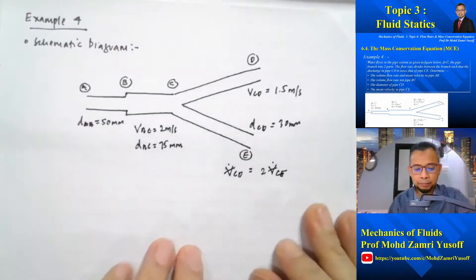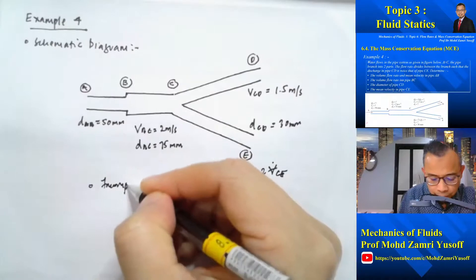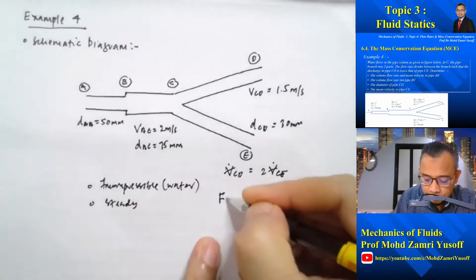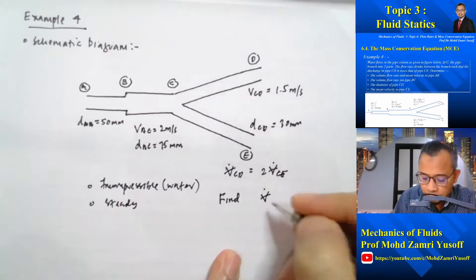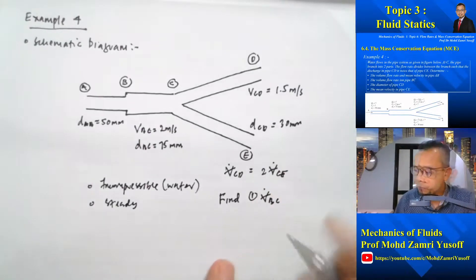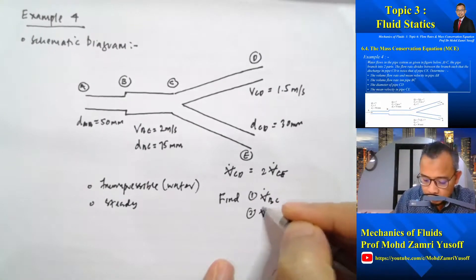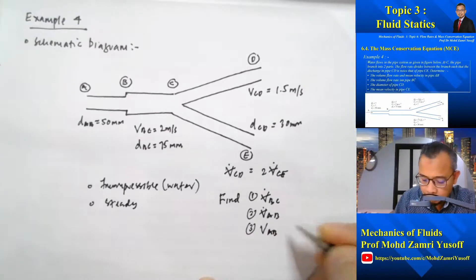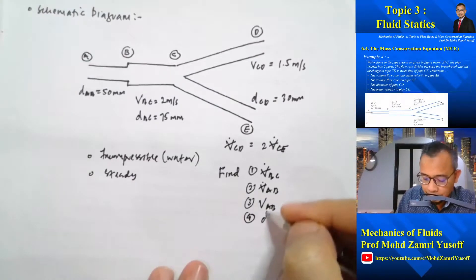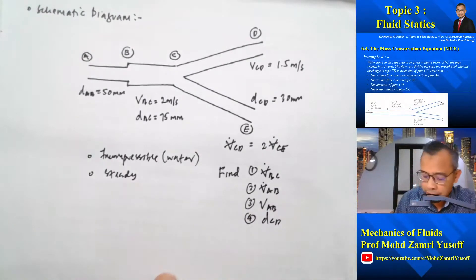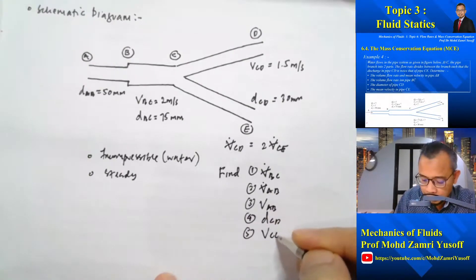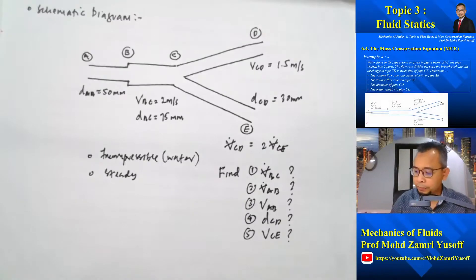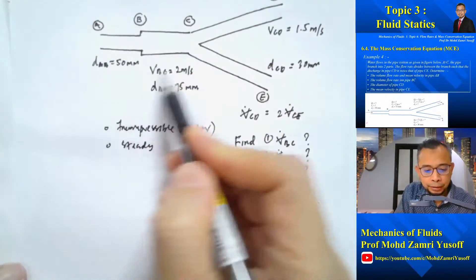The flow is incompressible because we are using water, and the flow is steady. We are asked to find: the volume flow rate in pipe BC, the volume flow rate in pipe AB, the velocity in pipe AB, the diameter of pipe CD, and the velocity in pipe CE — five values in total.